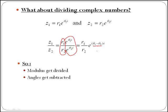In conclusion, you can say that when you divide complex numbers given in exponential form or in polar form, what happens is that the final modulus is the division of the two, and the final angle is the subtraction of the two.